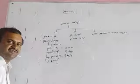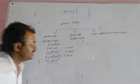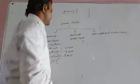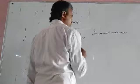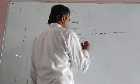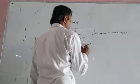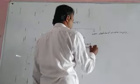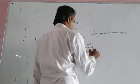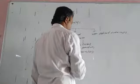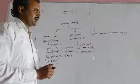When the user wants to store the largest data values, we use the derived data type. In this derived data type category there are three types: first, array; second, function; and third, pointer. These are the three important data types used in the derived category.